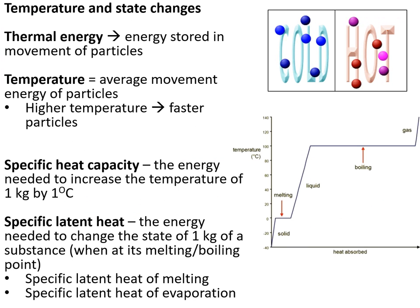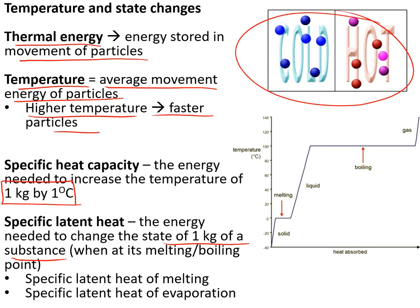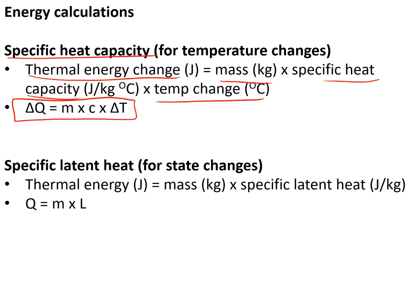Temperature and state changes: thermal energy is the energy stored in the movement of particles, and temperature is the average movement energy of particles — at higher temperatures particles move faster. Specific heat capacity is the energy needed to increase the temperature of one kilogram of a substance by one degree Celsius: delta Q = mcΔT. Specific latent heat is the energy needed to change the state of one kilogram of a substance at its melting or boiling point: Q = mL.